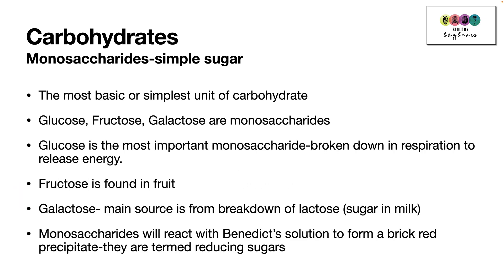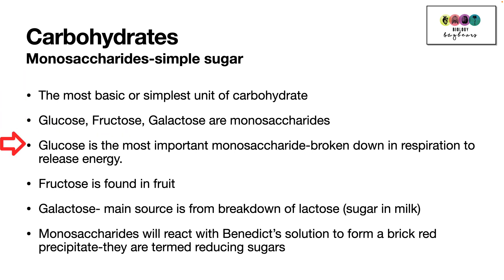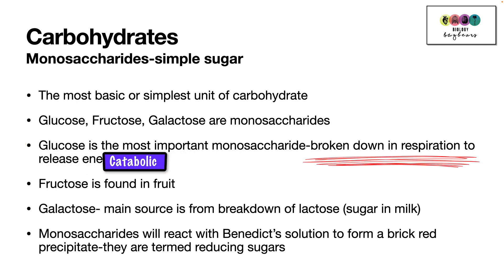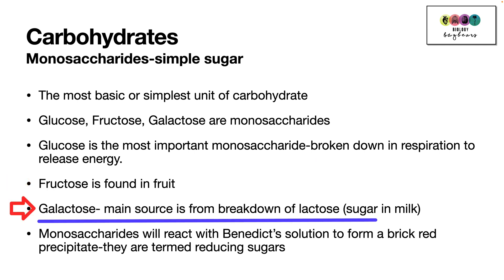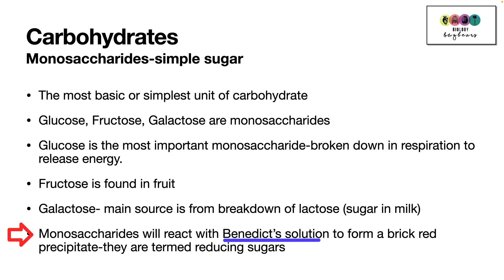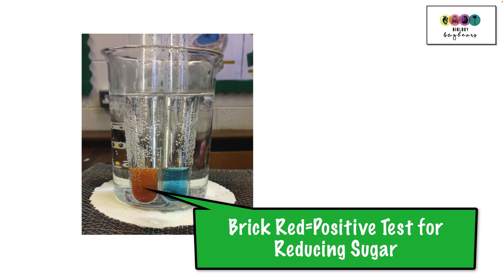We start with the most simple sugar unit, the building block of carbohydrates: the monosaccharides. Glucose, fructose, and galactose are monosaccharides. Glucose is the most important, broken down in respiration to release energy — a catabolic process. Fructose is found in fruit. The main source of galactose is from the breakdown of lactose, a sugar found in milk. Monosaccharides react with Benedict's solution to form a brick red precipitate, and because of this they are termed reducing sugars — shown here as a positive test.